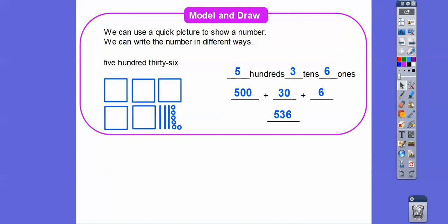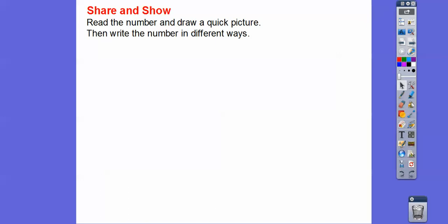And that's what they're going to ask us to do in this next section. So read the number and draw a quick picture and then write the number in different ways. 407. Now, this doesn't say 17. It doesn't say 70. So it's not a two-digit number. 7 is in the ones spot.